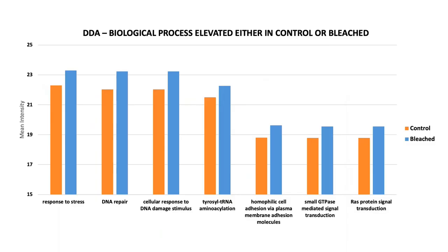Next, we examined peptides associated with function and saw a similar trend of not many changes within DDA control and bleach, and DIA control and bleach. However, when we looked at a few functions in DDA that were elevated either in control or bleach, surprisingly all were related with either DNA damage, response to stress, or signal transduction. This made us conclude that we need to analyze our data with other statistical tools or R scripts that can capture these small changes and make these available via the Galaxy platform.